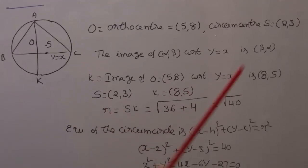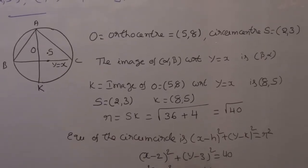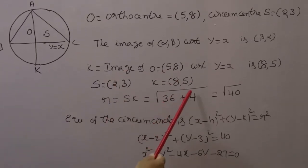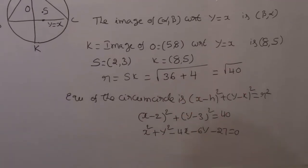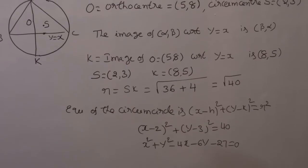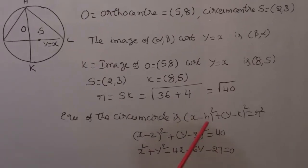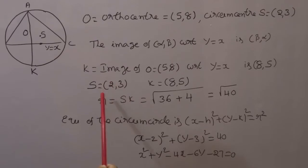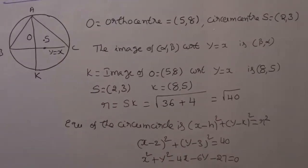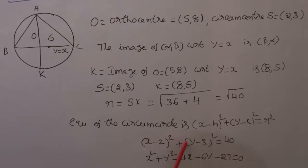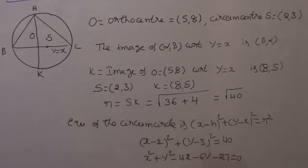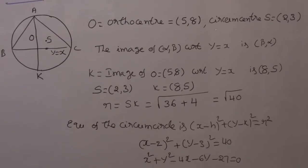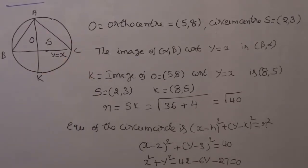The radius R equals the distance SK, which is the square root of (x₂ - x₁)² + (y₂ - y₁)². So R equals the square root of (8 - 2)² + (5 - 3)², which is the square root of 36 + 4, equal to the square root of 40. Using the circle equation (x - h)² + (y - k)² = r², with center (2, 3) and r² = 40, the equation is (x - 2)² + (y - 3)² = 40. Expanding: x² + y² - 4x - 6y - 27 = 0, which is the equation of the circumcircle of triangle ABC.